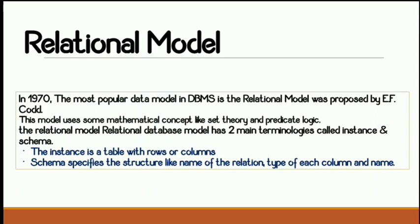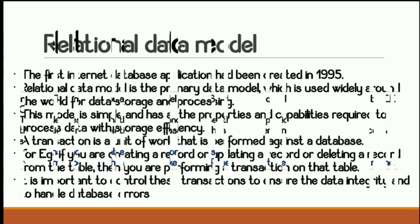What is an instance? An instance is a table with rows and columns. Any table which has rows and columns is called an instance. What is a schema? Schema is a structure — it is the relation between the columns and rows of the tables.